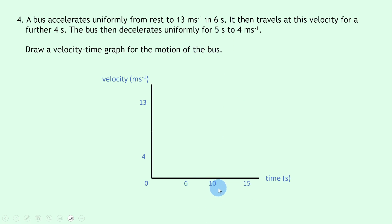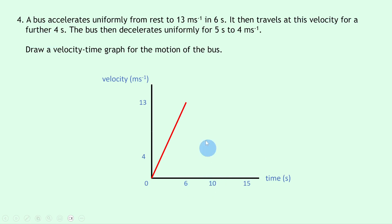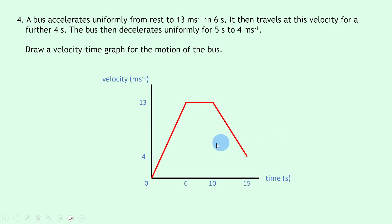A further 4 seconds takes us up to 10 seconds, and another 5 seconds takes us from 10 to 15 seconds on the x-axis. First, the uniform acceleration from rest starts at the origin and is shown as a positively sloping diagonal line reaching 13 meters per second at 6 seconds. Then, constant velocity from 6 to 10 seconds is a straight horizontal line. Finally, constant deceleration from 10 to 15 seconds is shown as a negatively sloping diagonal line ending at 4 meters per second.